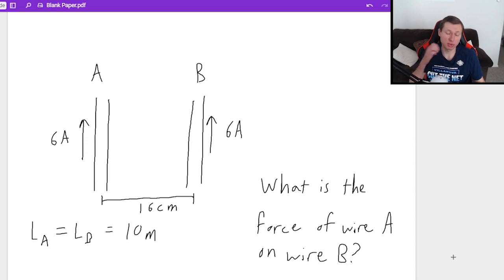Now you should know because of Newton's third law that the forces on each other will be equal, because every force has an equal and opposite reaction force. So the force of wire A on wire B is the same as the force of wire B on wire A, so it doesn't matter if that's confusing to you, you'll get the same answer.